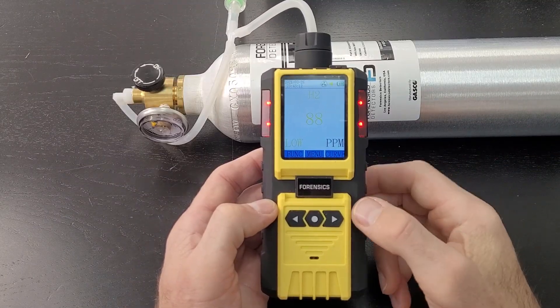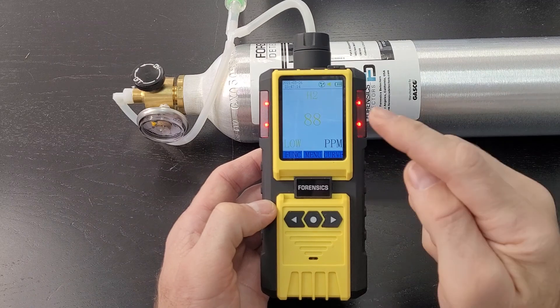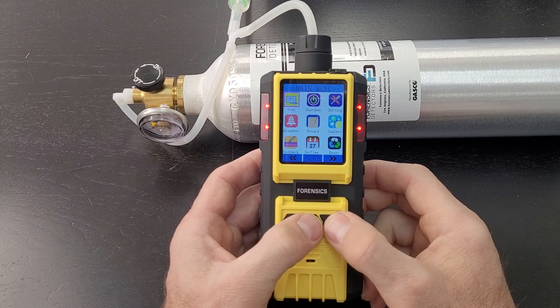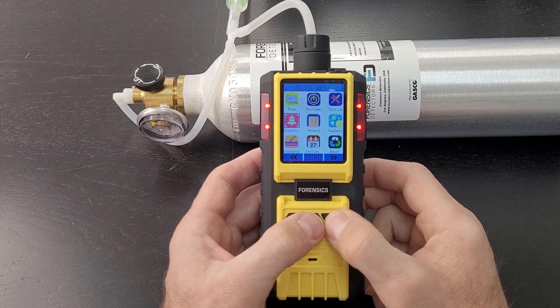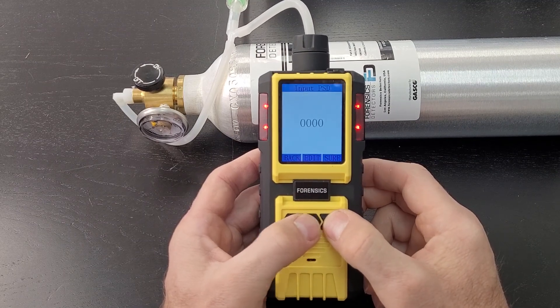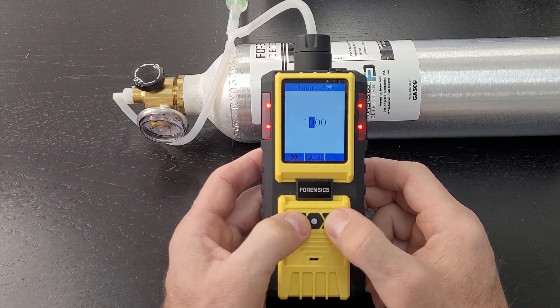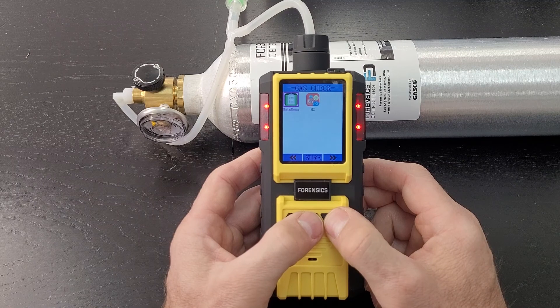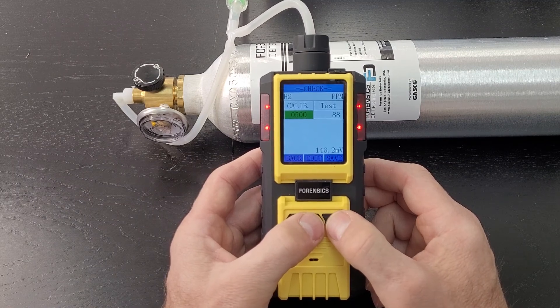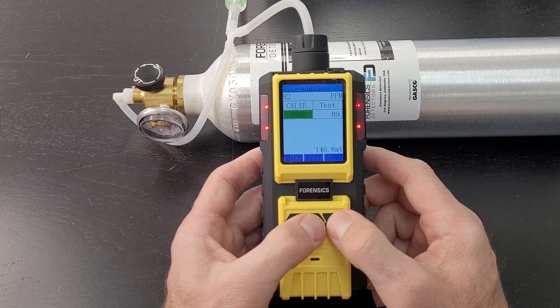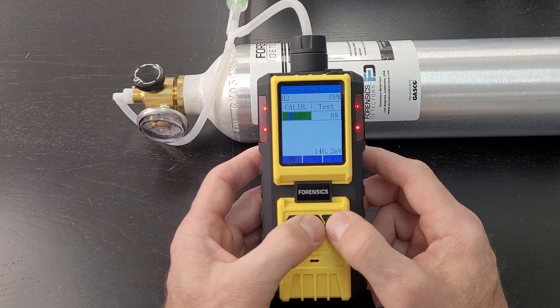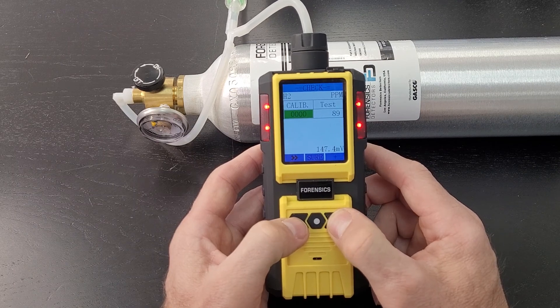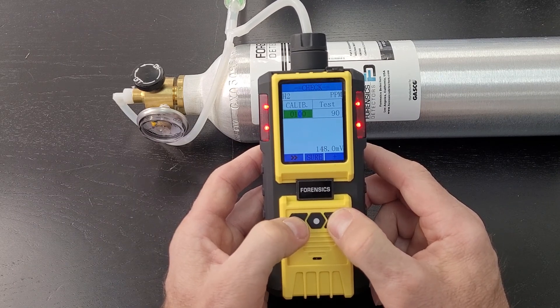All right, we're back after a good 60 seconds. As we can see, 88 parts per million - it should be 101, so let's calibrate it. Go to menu, go to gas check, click on gas check. Put the code in, 1111, enter. Go to H2. Now here is where we tell the detector what gas we're calibrating to.